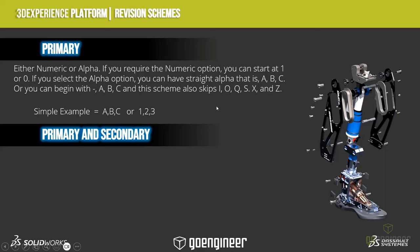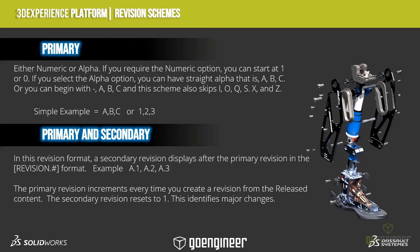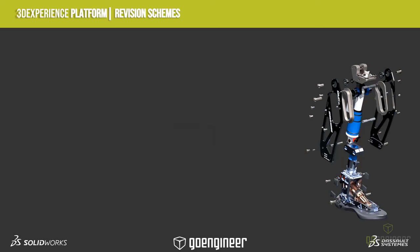The second revision scheme — and probably the most widely used one — is primary and secondary. In this format, the secondary revision displays after the primary revision: A.1, A.2, A.3 is the sequence. The primary revision increments every time I create a revision from released content — from that locked-down content — bumping the primary from A to B. The secondary revision resets to 1, identifying major changes. The secondary revision increments every time I create a revision from non-released content — if I want to increment something in-work or frozen — that's generally why I would do that.